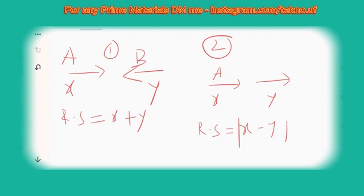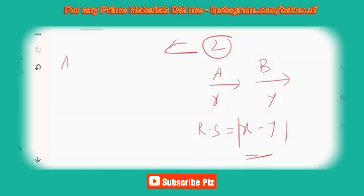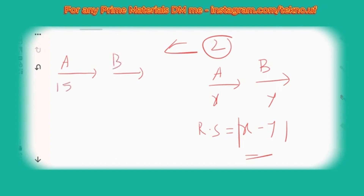There can be questions like: if A and B are running in the same direction, A at x km/h and B at y km/h, when will A cross B? For example, A and B are running in the same direction at 15 km/h and 10 km/h respectively, and the distance between them is 500 meters. When will A meet B?